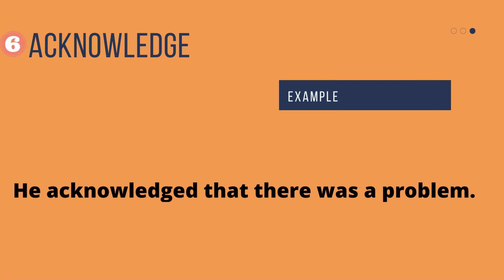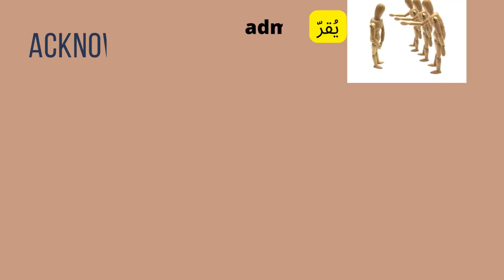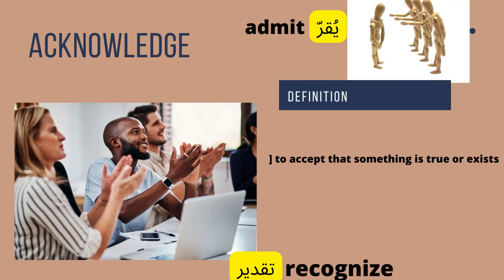Acknowledge has many meanings; we will talk about two of them today. Example: he acknowledged that there was a problem — he accepted it as true, he admitted it. So acknowledge has the first meaning: admit. And the second meaning: recognize. When someone does a good job at work, it's nice to recognize their efforts. The definition is: to accept that something is true or exists.